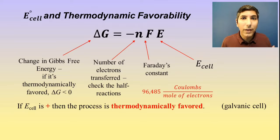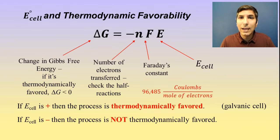By convention, that E cell, that potential difference, has to be positive. And if that's the case, the process is thermodynamically favored. Now there are some electrochemical cells that could have a negative value for E cell.